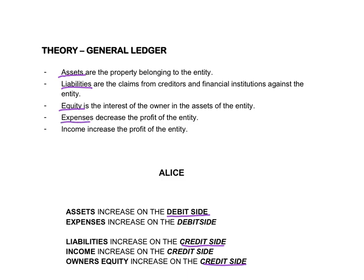Expenses decrease the profit of the entity. The purpose of the business is to make a profit. When income is received the profit increases, and when expenses are paid the profit of the business will decrease. Expenses always increase on the debit side and expenses will always have a debit balance.